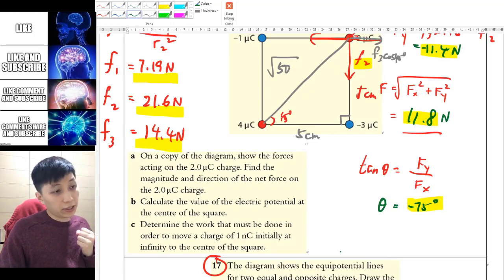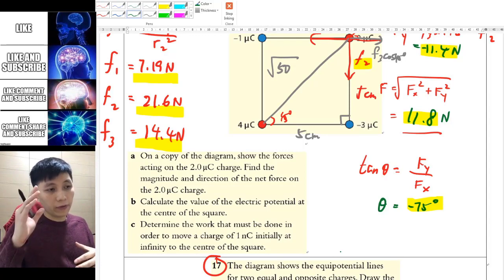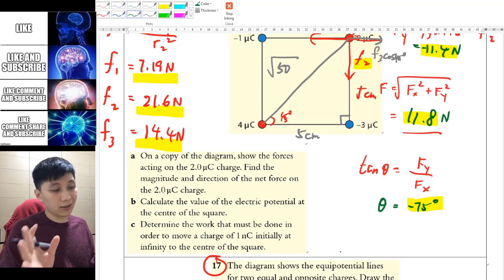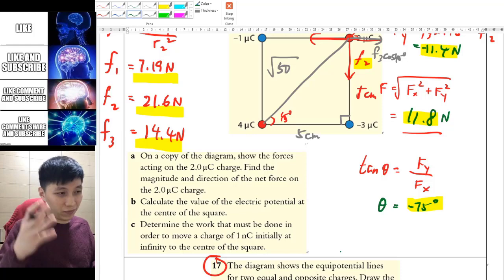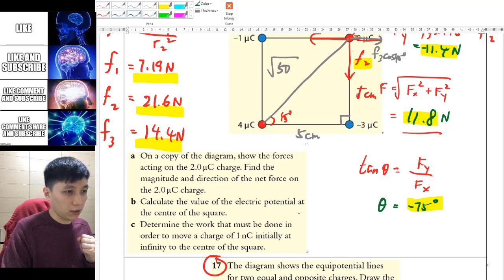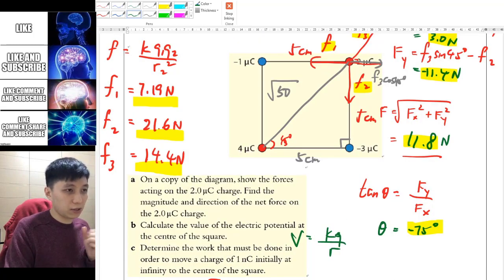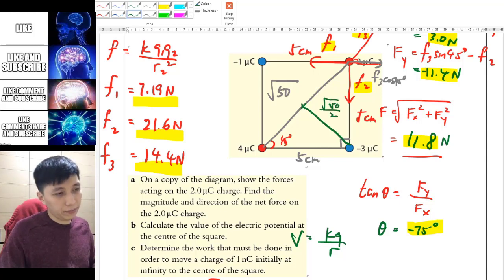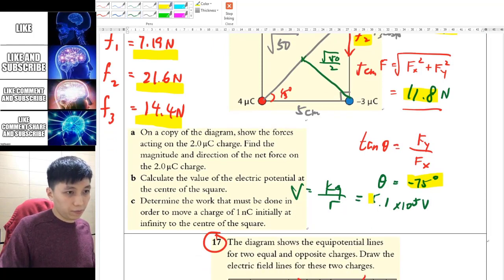Part b asks to calculate the electrical potential at the center. Similar to previous questions, potential is a scalar so it doesn't care about direction. This time it's much easier—just use the equation V equals kq over r. The distance from each vertex to the center is root 50 divided by 2. Just add all four together.